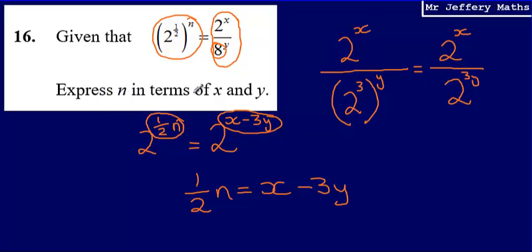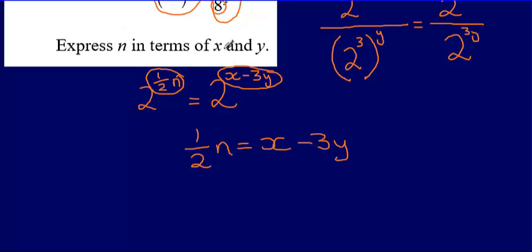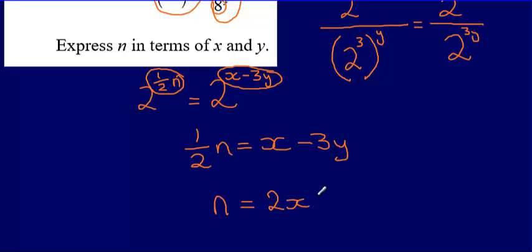When asked to express n in terms of x and y, it's like saying I want to make n the subject, where n is equal to something in x and y. I've got half n is equal to x minus 3y, and I want n on its own. So I'm going to multiply both sides by 2. Multiplying half n by 2 gives me n, and multiplying x minus 3y by 2 gives n is equal to 2x minus 6y. So the final answer is n equals 2x minus 6y.